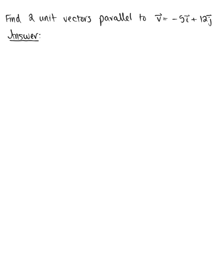Here we're asked to find two unit vectors parallel to vector v, which is defined as -5i + 12j. I'll immediately rewrite my vector in component form: <-5, 12>.